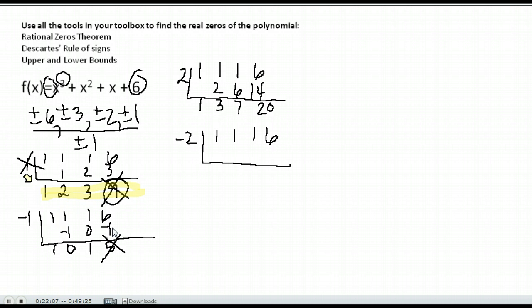Let's try negative 2, because negative 1 wasn't a lower bound. For that to happen, you have to have alternating signs on the negative. Let's try negative 2. Oh, awesome. Negative 2 gives me a 0 at the end. So I know negative 2 is one of my answers. It's one of my zeros.